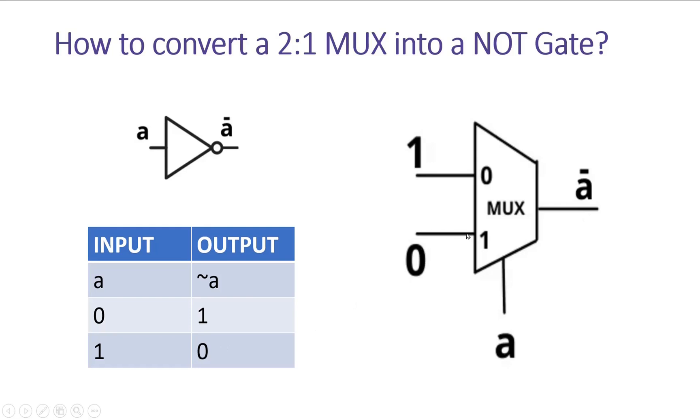And this is how we will implement a NOT gate with the help of a 2 to 1 multiplexer.